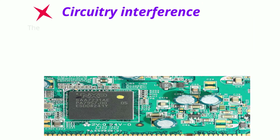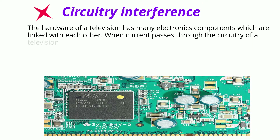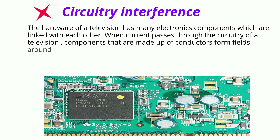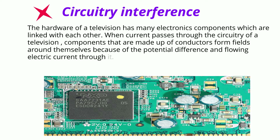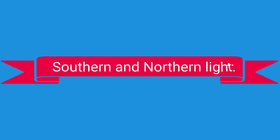The hardware of a television has many electronic components linked together. When current passes through the circuitry, components made of conductors form fields around themselves due to potential difference and the flowing electric current. The field lines of each component interfere with each other and create a noise signal. Thus, circuitry interference is also a field force.